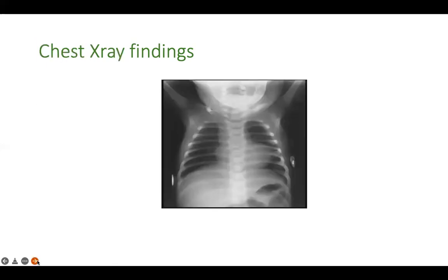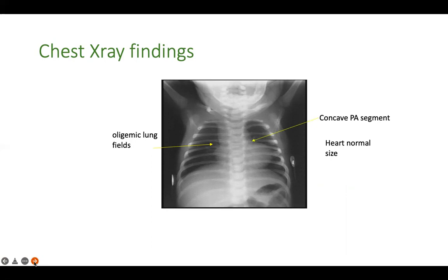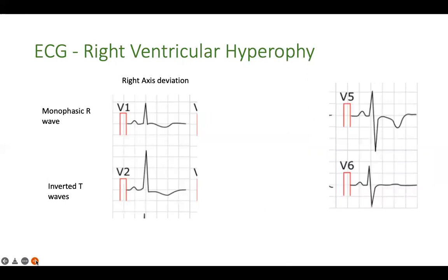On chest X-ray, because of decreased pulmonary blood flow there are oligemic lung fields — the lung appears more black in color. Because the pulmonary artery is narrow there is a concave pulmonary artery segment, the aorta appears large, and because of RVH there is an RV apex with an upturned apex, giving the classical boot-shaped heart appearance.